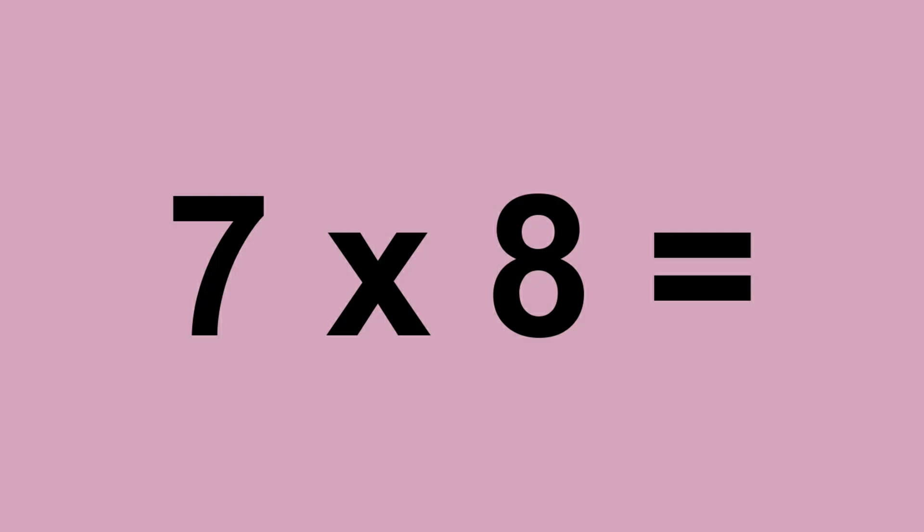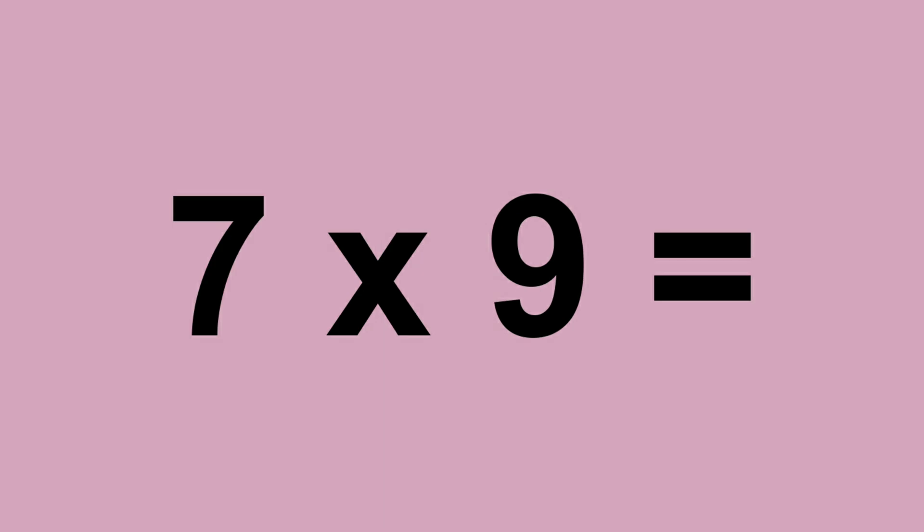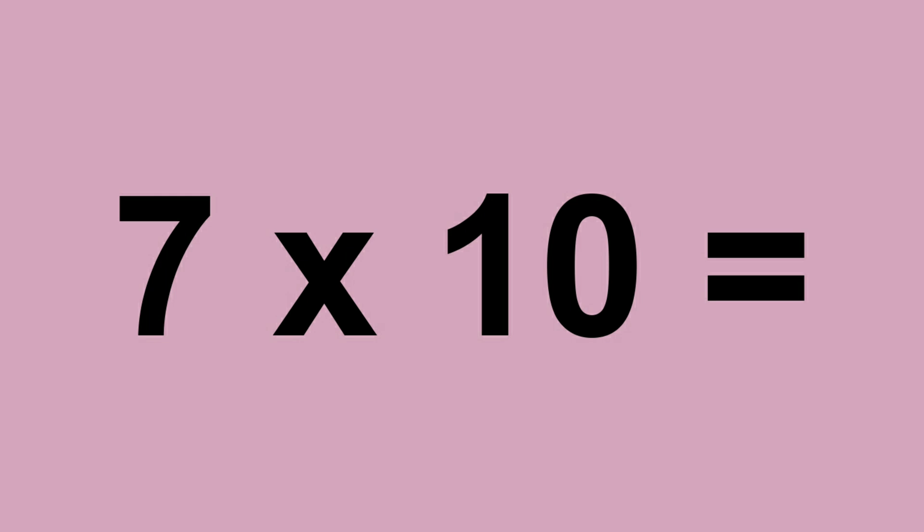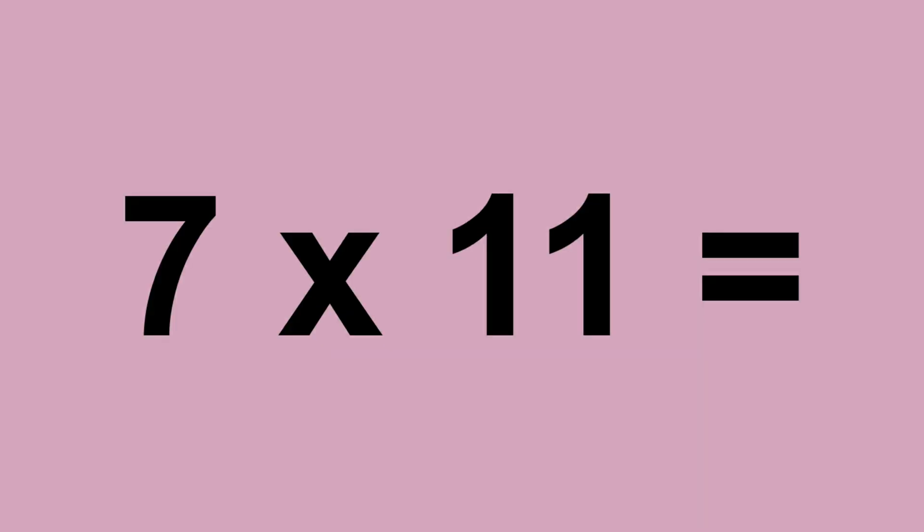7 times 8 equals 56. 7 times 9 equals 63. 7 times 10 equals 70. 7 times 11 equals 70.